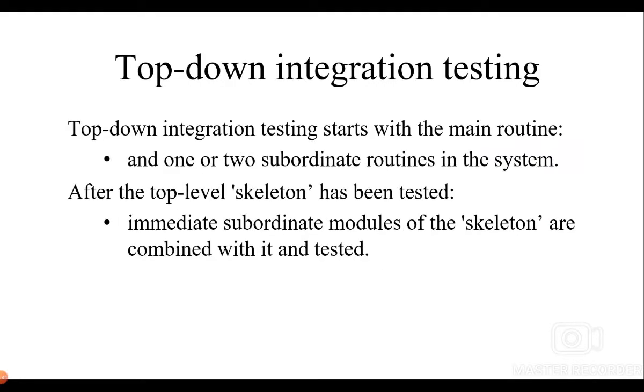The next we have is the top-down integration testing. Here the testing starts with the main routine and one or two subordinate routines in the system are then integrated and tested. After the top-level skeleton has been tested, immediate subordinate modules of the skeleton are combined with it and tested. This is opposite to bottom-up testing and is the conventional way of general testing which we do in smaller programs.